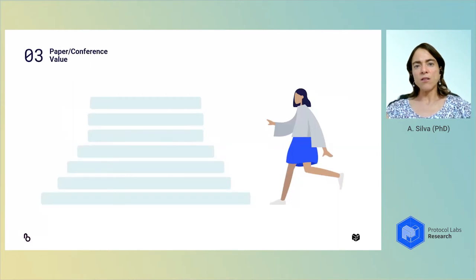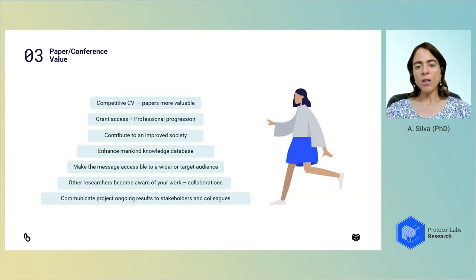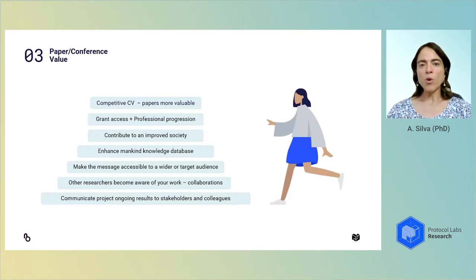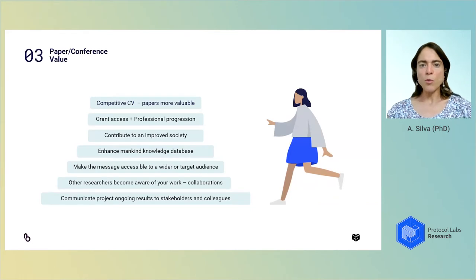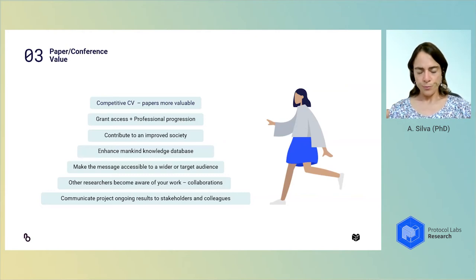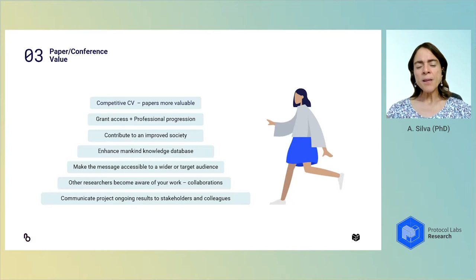Why are conference attendance and publishing papers important? There are a lot of reasons. First of all, it's what makes your CV competitive in an academic or research world. Papers are more valuable than going to conferences, and within conference attendance, going with oral communication is more important than going with a poster. This is due to the capacity you have to reach different audiences with a paper — your research goes wide, global, eventually — and that much greater visibility, combined with peer review, gives credibility to the research. So normally papers are given extra credits in terms of CV evaluation.